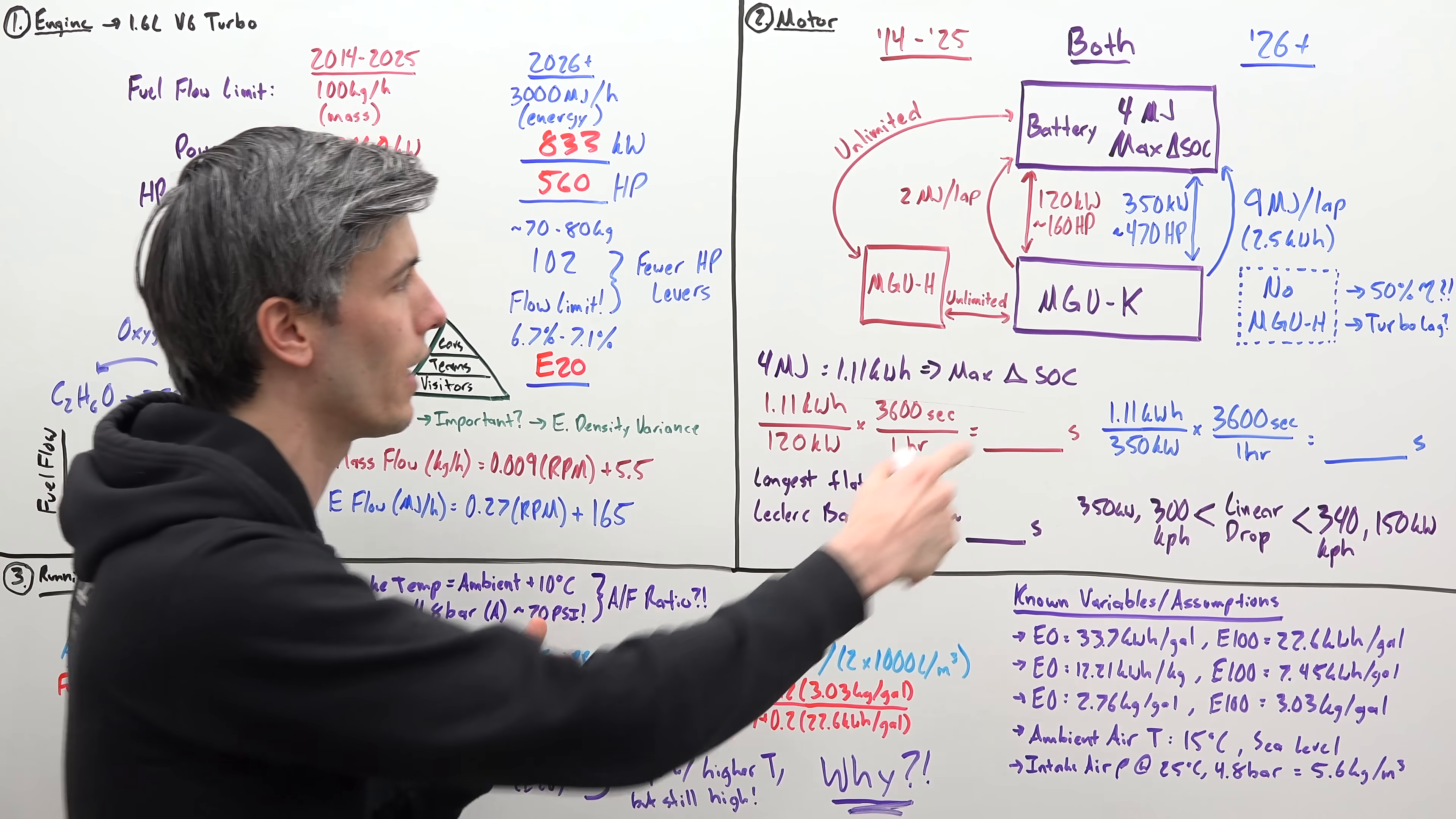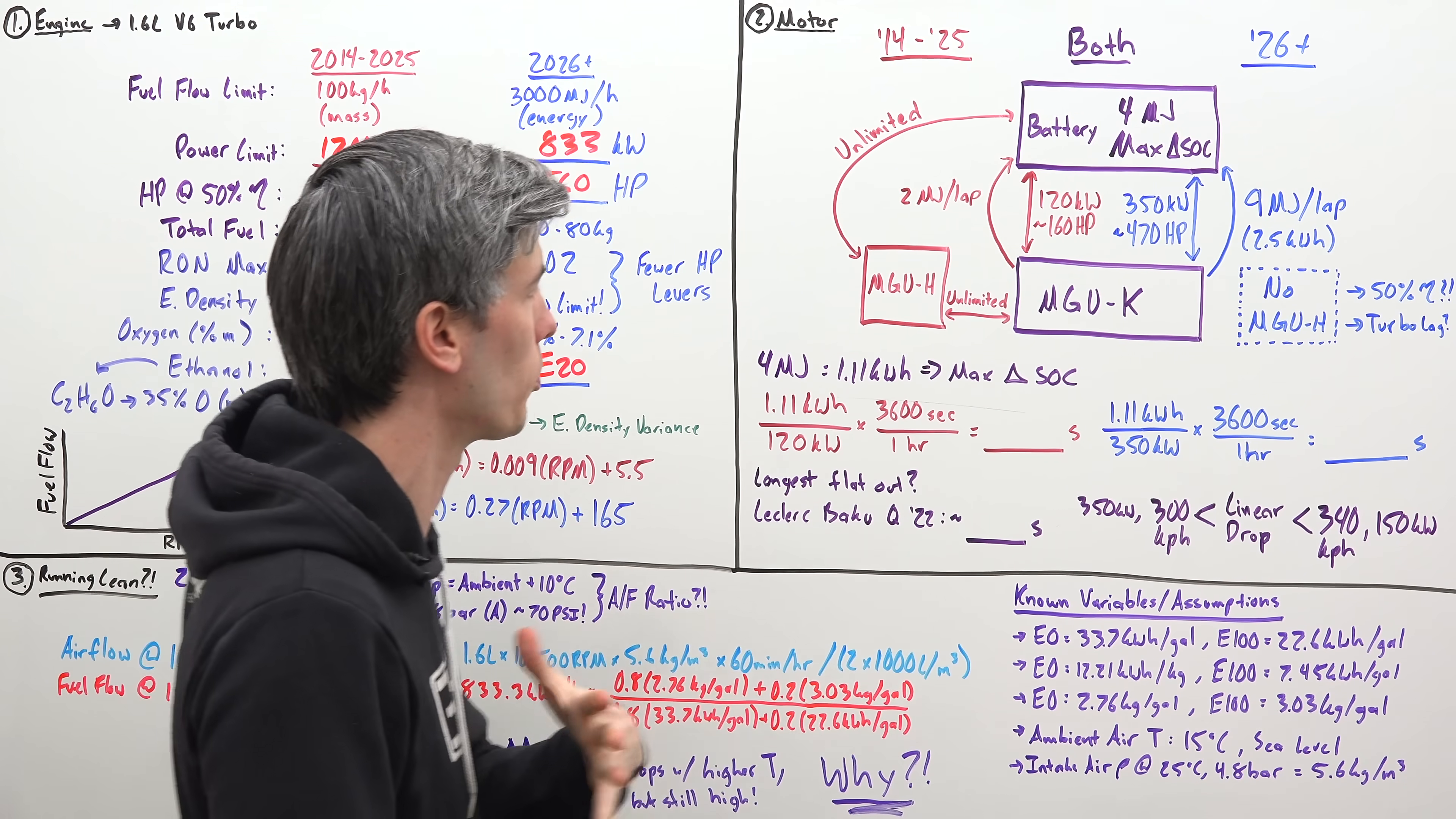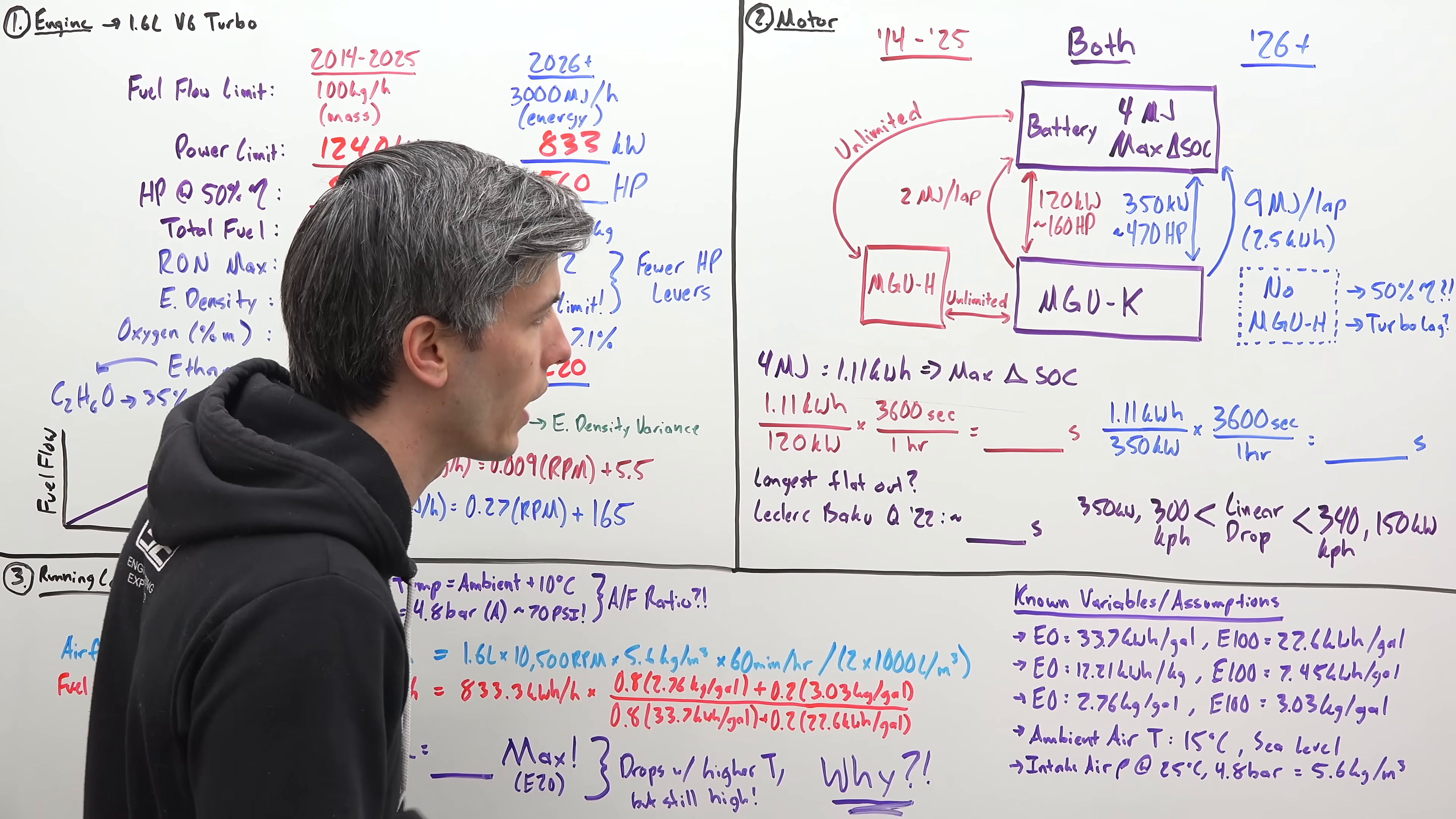Some other big changes. The energy that you can regen, so as you're slowing down, using that MGU-K to put energy from the electric motor into the battery, increases from 2 megajoules per lap to 9 megajoules per lap. A lot more energy, 2.5 kilowatt hours per lap, that you can put back into that battery. However, you no longer have the MGU-H. The electric motor that was once attached to the turbocharger, which you can use to take wasted energy going out the exhaust and turn it into useful energy that you could store in the battery or send to the MGU-K and help propel the car, that is no longer there. One of the really interesting things is Mercedes has previously said the reason why they were able to achieve 50% thermal efficiency with their Formula 1 combustion engine they would not be able to do without the MGU-H. So it'll be really interesting to see what that efficiency number is for the future generation of cars. And also, because they no longer have this electric motor attached to the turbocharger, that means the return of turbo lag.